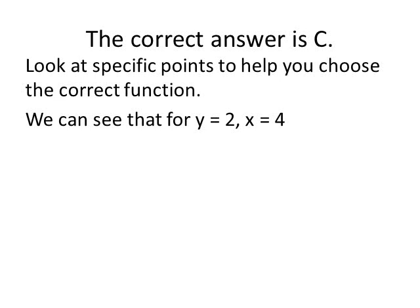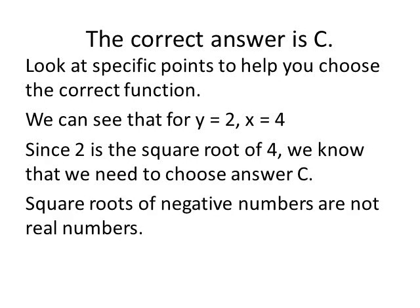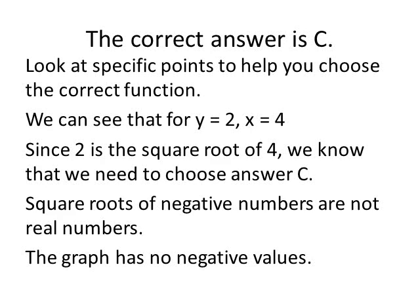We can see on our graph here that where y is equal to 2, x is equal to 4. Since 2 is the square root of 4, we know that we need to choose answer C. Also notice on this graph that there are no negative numbers. We know that square roots of negative numbers are not real numbers. So that also shows that we need to choose answer choice C because the graph has no negative values.